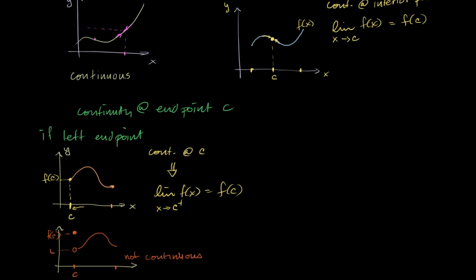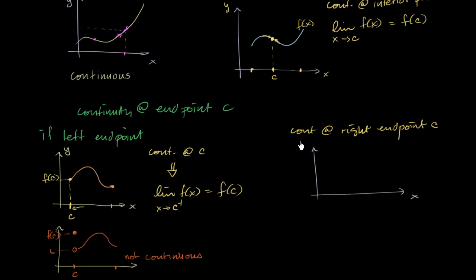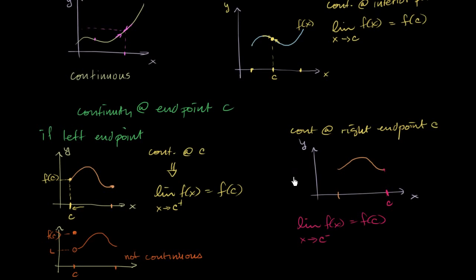And you can imagine what we do if we're dealing with a right end point. We are continuous at right end point c if — let me draw that — this is my x-axis, this is my y-axis. A right end point means c is right over there. The function is continuous at x equals c means that the limit of f of x as x approaches c from the negative direction is equal to f of c. We can only approach it from the left hand side. If this is true, then this implies that we are continuous at that right end point c, and vice versa.